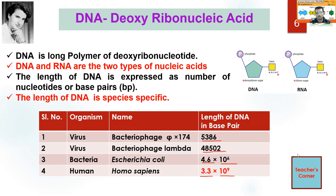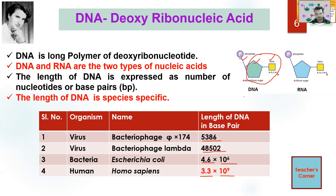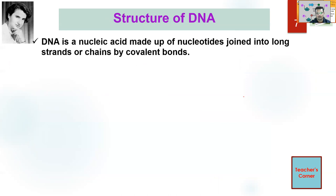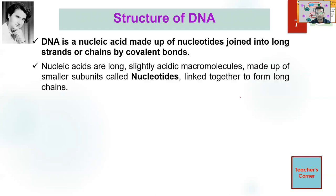We'll also talk about the differences between DNA and RNA. As far as the nucleotide is concerned, it will have a sugar, a nitrogenous base, and a phosphate — these three make a nucleotide. But if you keep just the sugar and base, without the phosphate, it will be a nucleoside. So you should be able to differentiate between nucleoside and nucleotide. Nucleic acids are long, slightly acidic macromolecules made up of smaller subunits called nucleotides, linked together to form long chains.